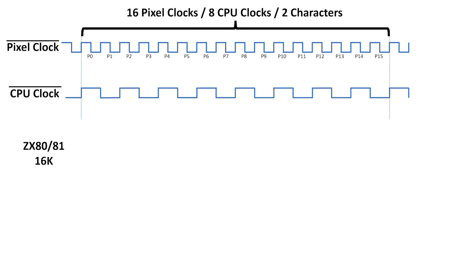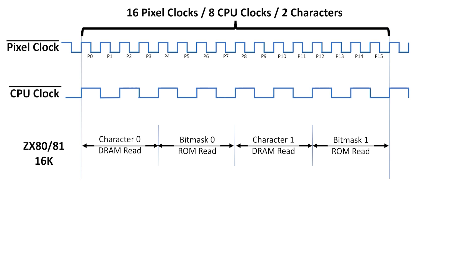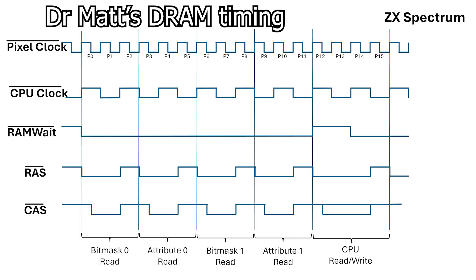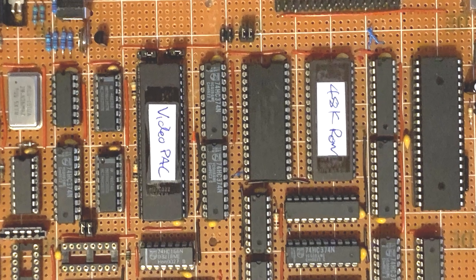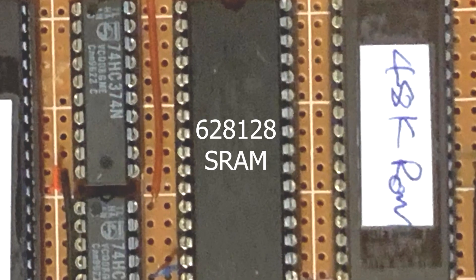In a given 16-pixel window during active display, the ZX81 performs 4 memory operations and the Spectrum performs 5. I came up with a proposed timing diagram, but this was more derived from first principles than actual data. Each memory access has a complete RAS and CAS cycle, which enables full random memory access per memory cycle. In the ZX Spectrum, this means the bitmap address can be completely independent of the attribute address in memory. In the build I'm using static RAM, so this is a little academic, but it may impact the number of Z80 wait cycles I need to insert.